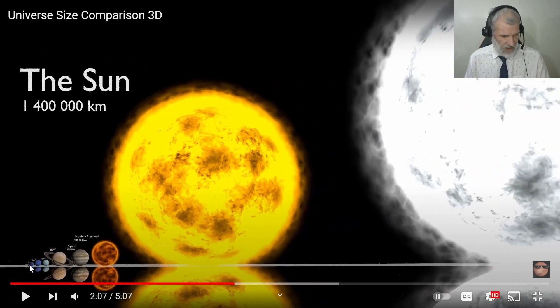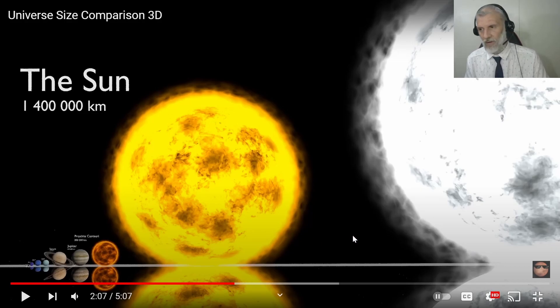All right, if we just go back here, we're down here somewhere. We're what, number four on the list here, and it just shows you the difference in scale between just our sun. But yeah, our sun is pretty small.